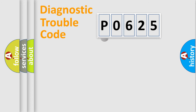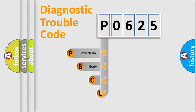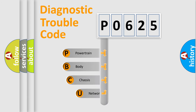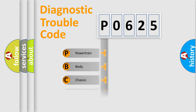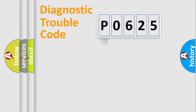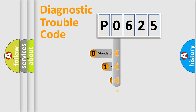First, let's look at the history of diagnostic fault code composition according to the OBD2 protocol, which is unified for all automakers since 2000. We divide the electric system of the automobile into four basic units: powertrain, body, chassis, and network. This distribution is defined in the first character of the code.